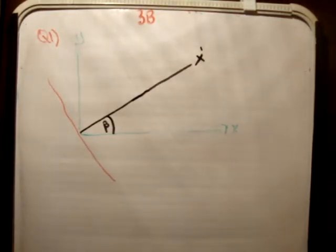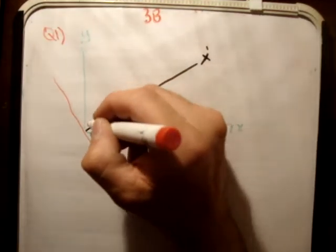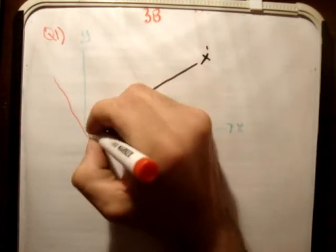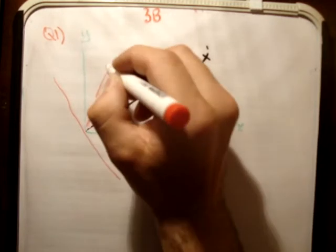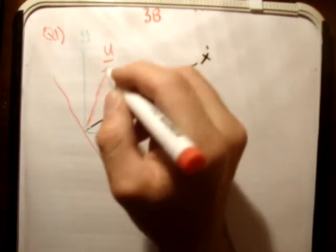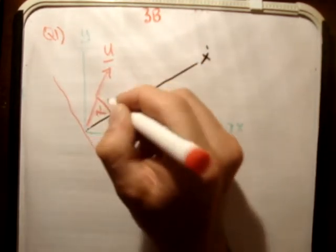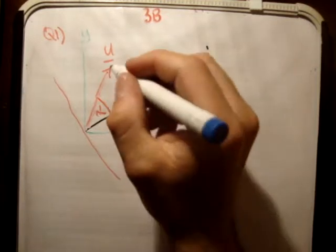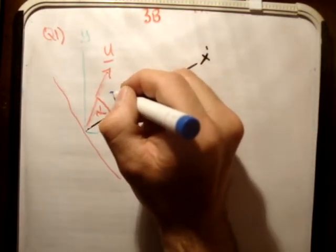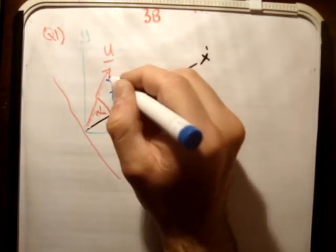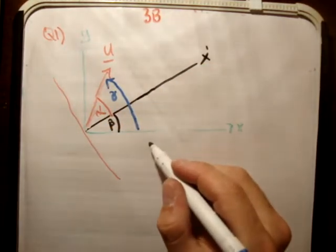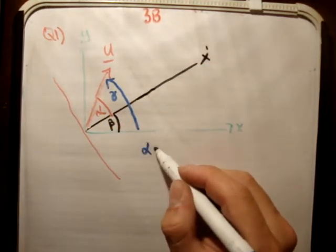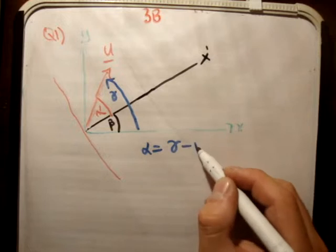Now, so we said we're projecting this at an angle alpha to the hill. Like that, to the hill. Now, of course, we also know that this angle alpha, if we call this angle here gamma, we know that alpha is equal to gamma minus beta.